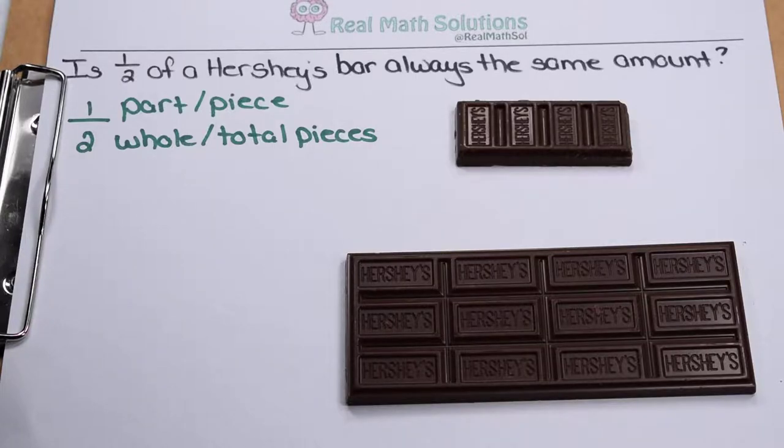So if they get half, is that half always going to be the same amount? Well first off, one half tells us that they get one part or one piece out of the two whole or the two pieces it needs to make the entire candy bar.